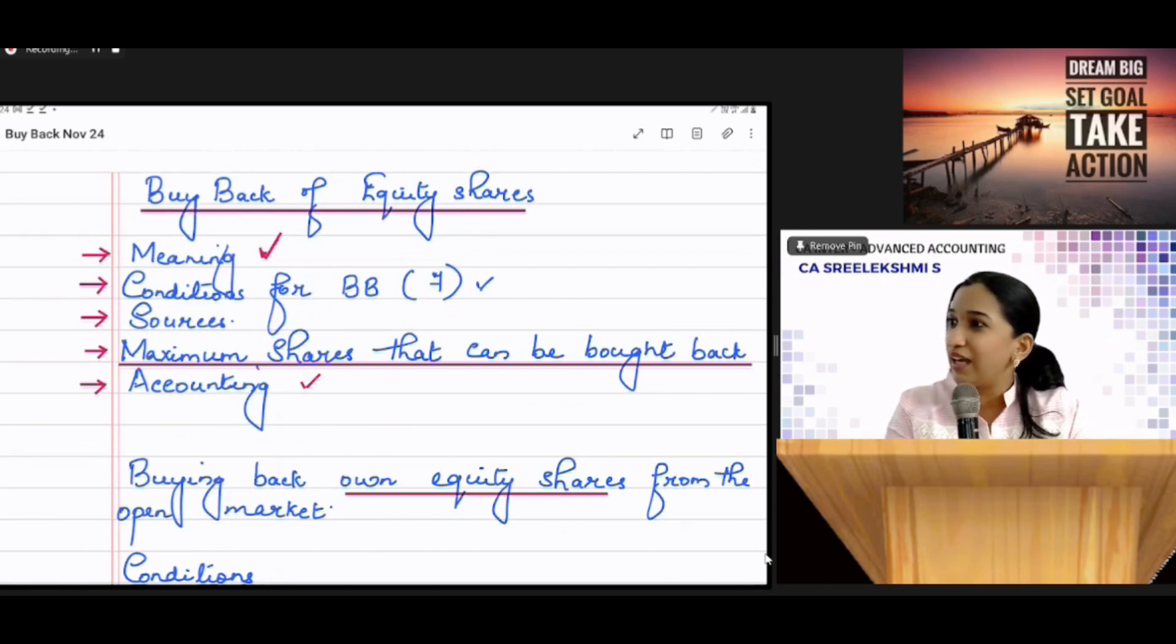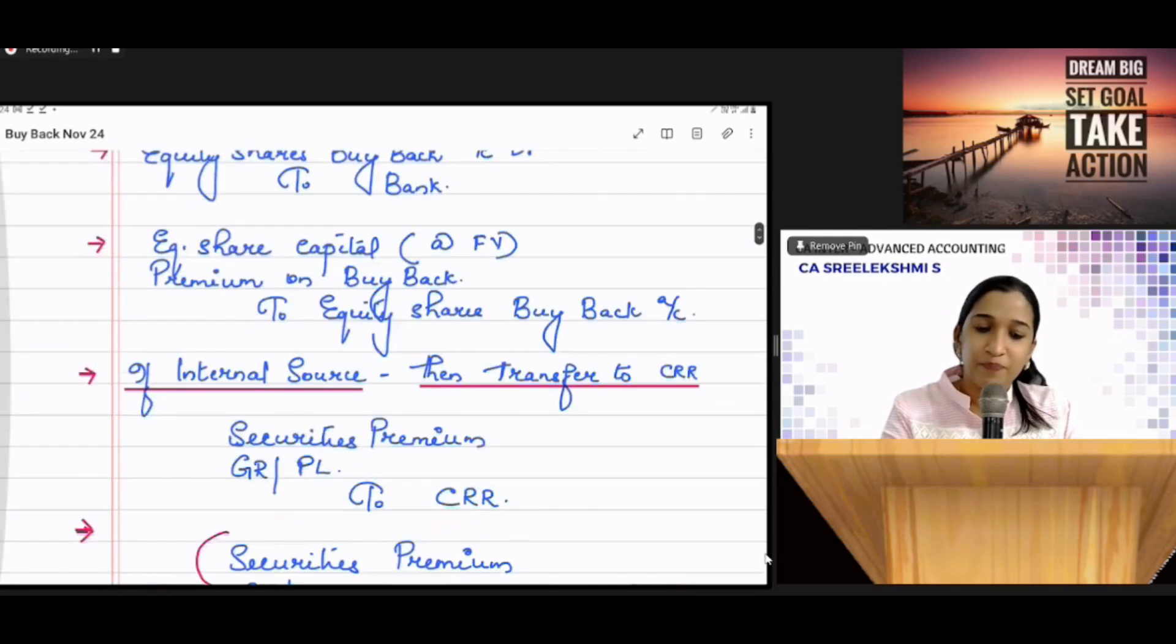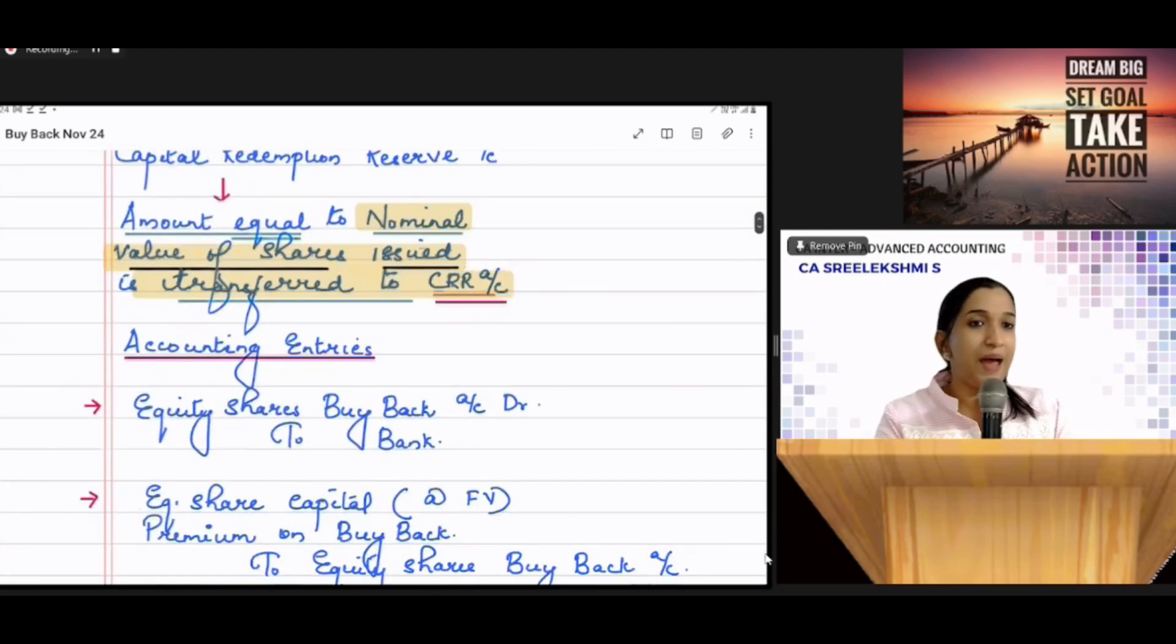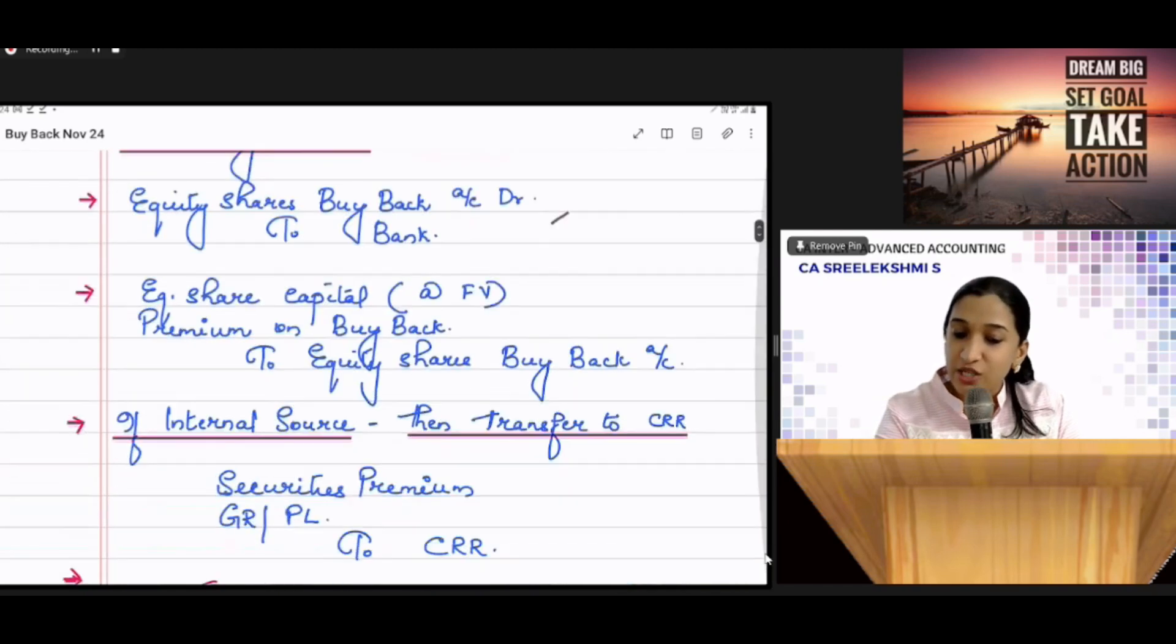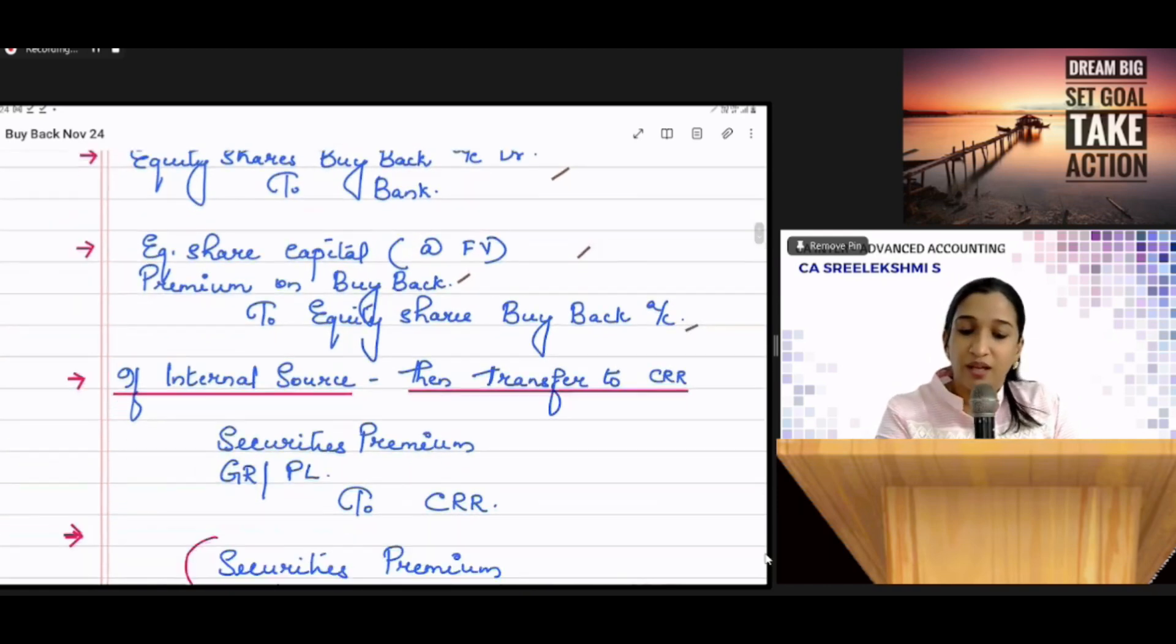Accounting entries, equity shares buyback to bank. Cancellation, equity share capital at face value, premium on buyback to equity shares buyback account.